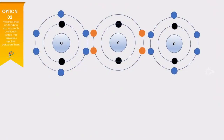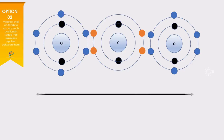The second point says valence shell electron pairs tend to occupy such positions in space that minimizes the repulsion between them. As an example, in carbon dioxide, the valence shell electron pairs keep at a linear distance of 116.3 picometers, which minimizes the repulsion between them. I hope the idea is clear.